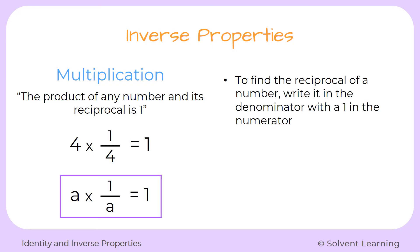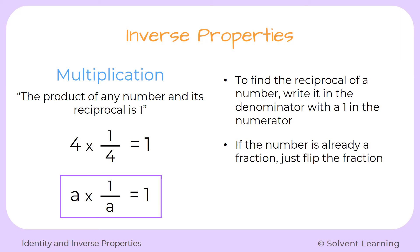To find the reciprocal of any number, take that number and write it as the denominator under the fraction line, then put a 1 as the numerator. Now if the number is already a fraction, you would just flip it. For example, if you start with the fraction 2 over 3, you flip it and it becomes 3 over 2. The reciprocal can also be called the multiplicative inverse — it's just a synonym for reciprocal.